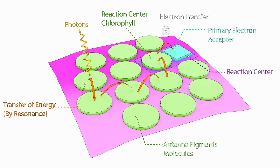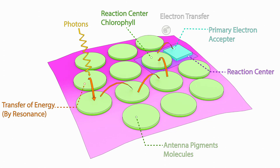This is a light collection facility — a light harvesting complex. The antenna pigment molecules are transferring the light toward the core of the photosystem, that is the reaction center. Here in the reaction center, chlorophyll A is present, which excites the electrons and starts the process of photosynthesis, and we call it a light-dependent reaction.